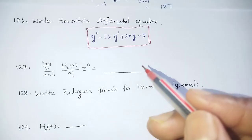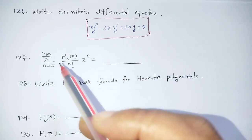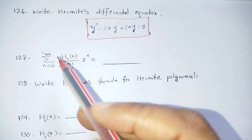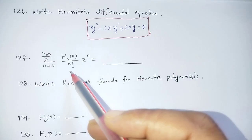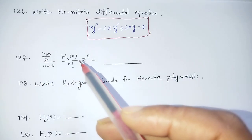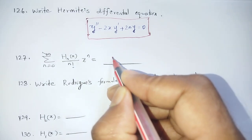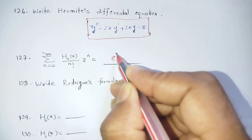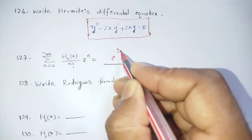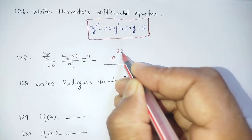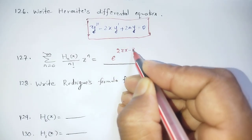The generating function for Hermite Polynomials is: summation over n from 0 to infinity of Hn(x)/n! · z^n = e^(2zx - z²).